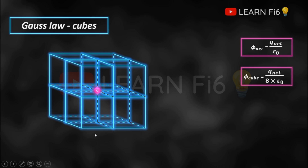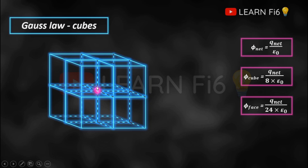To find the flux through a face, we count the visible faces — there are 24 visible faces. You should not count the faces that are not visible, only the visible ones. The flux per face is given by q net divided by 24 times epsilon 0. That is it.